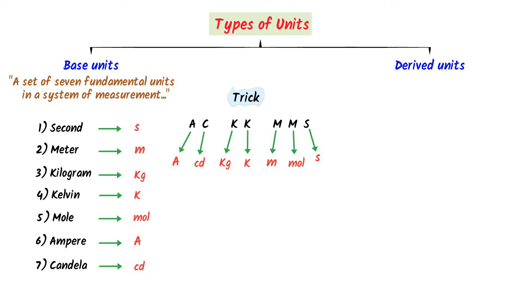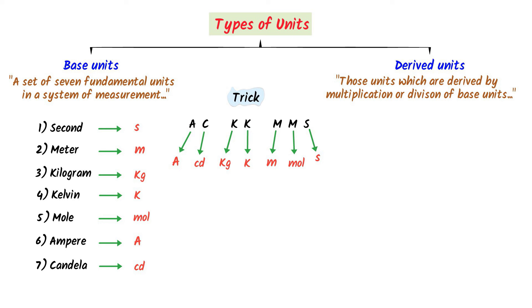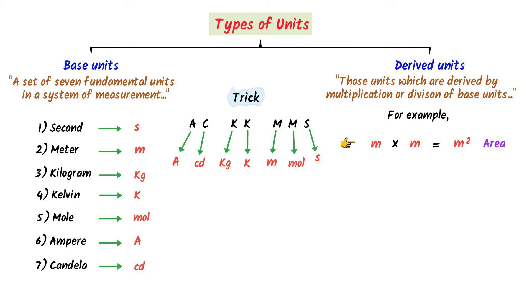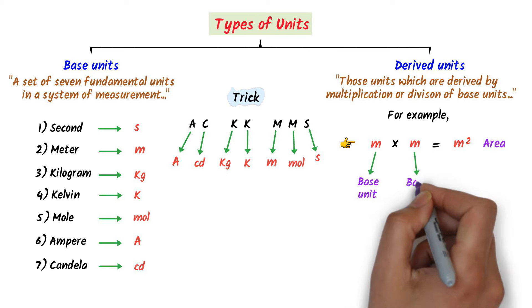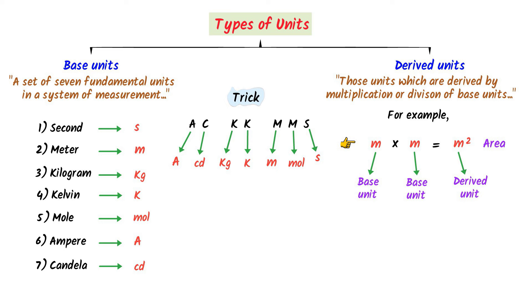Derived units are those units derived by multiplication or division of base units. For example, meter multiplied by meter gives meter squared, the unit of area — this is a derived unit because it comes from multiplying two base units. Similarly, meter divided by second gives meter per second, the unit of speed — also a derived unit because it is derived from dividing two base units.